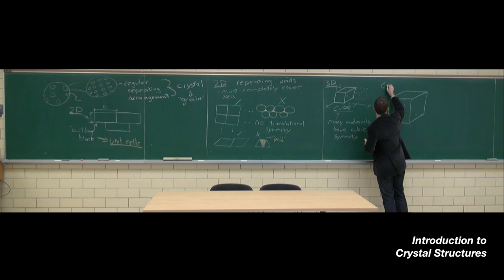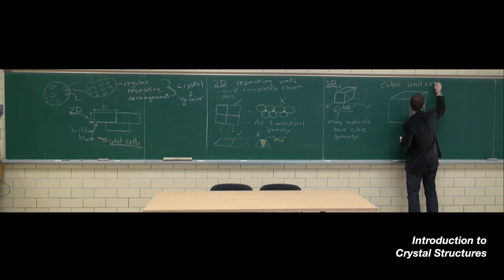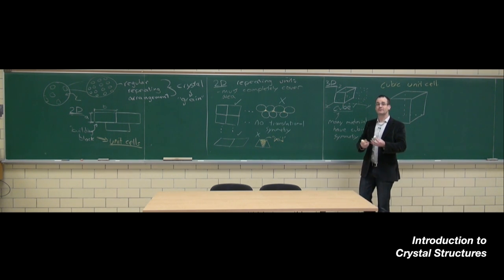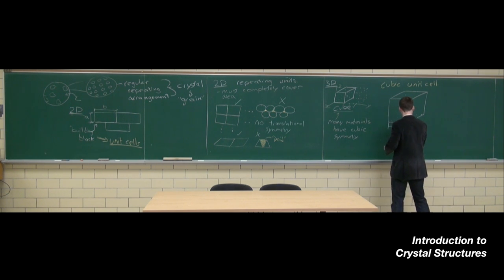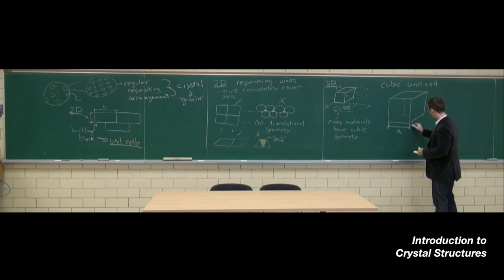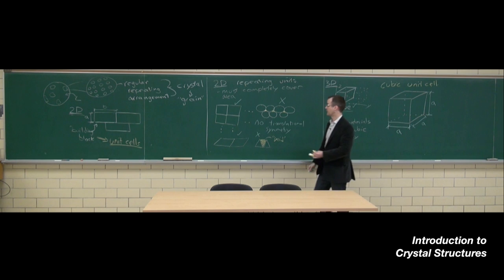What I've sketched over here then is a cubic unit cell. We should be able to describe the dimensions of the cube, so we would need the cube edge length. Of course it's a cube, so each of the linear dimensions is equivalent, and commonly we just refer to them with the lowercase letter a.